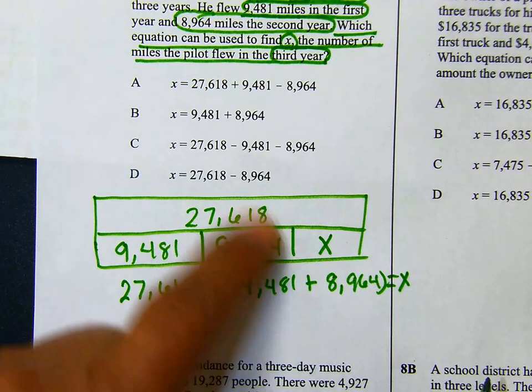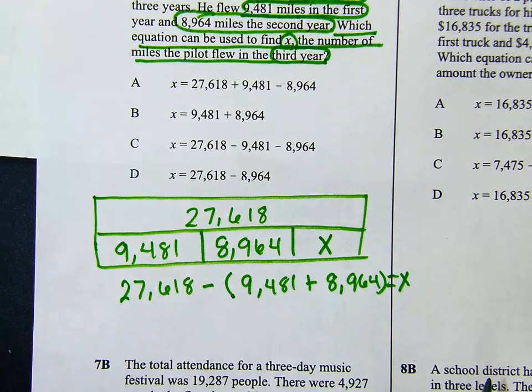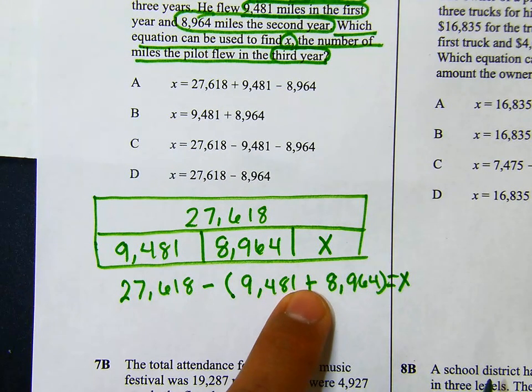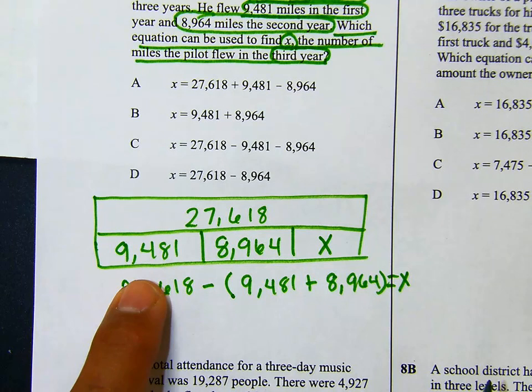If we look at our answer choices, that equation isn't listed there — it doesn't show where we add those two numbers and then subtract from the total.